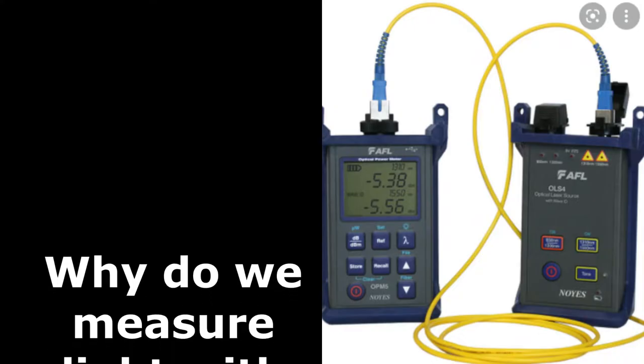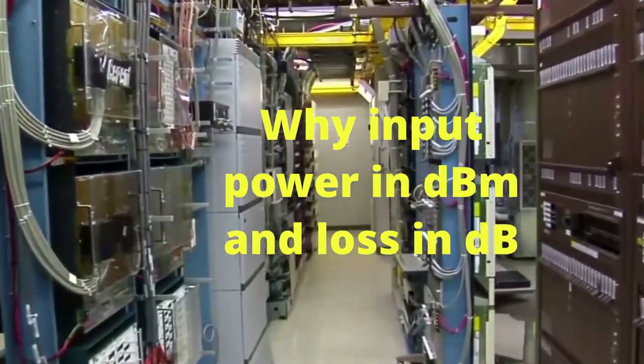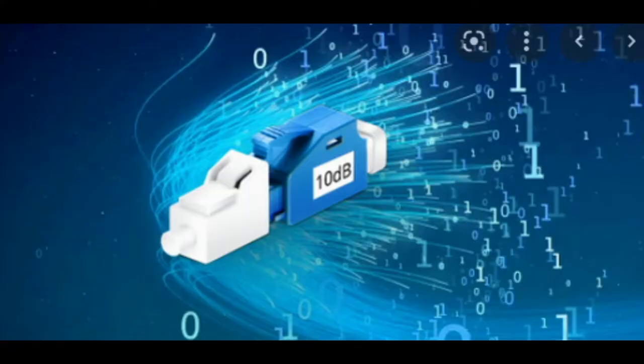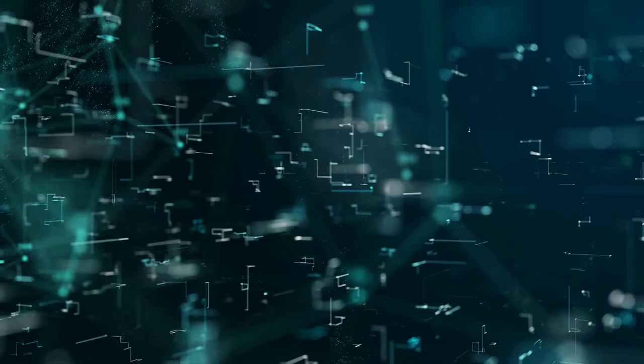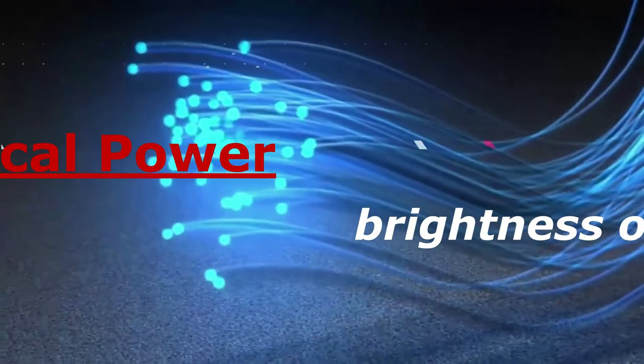Do you know why do we measure light with the decibel? Why input power in dBm and loss in dB? What does 3 dB, 6 dB means? In this video, we'll cover the same, that will be helpful to understand optical power.